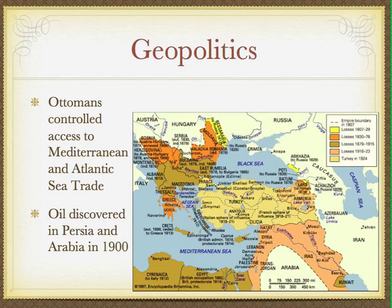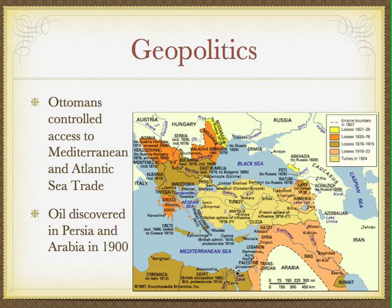Geopolitically, why is the Ottoman Empire so important? If you control the Ottoman lands, you control Mediterranean and Atlantic sea trade — all trade between Africa, Asia, and Southern Europe. This became even more important when oil was discovered in Persia and Saudi Arabia around 1900. The Ottoman Empire dissolved over time; by about 1924, all those vast colored regions had shrunk down to the small country of Turkey.